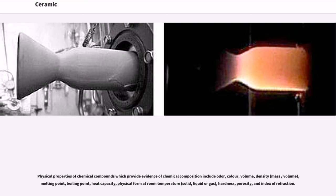Physical properties of chemical compounds which provide evidence of chemical composition include odor, color, volume, density, mass, melting point, boiling point, heat capacity, physical form at room temperature (solid, liquid or gas), hardness, porosity, and index of refraction.